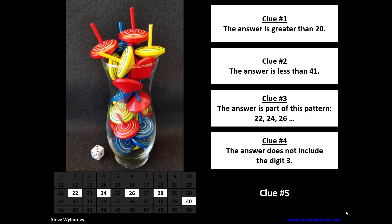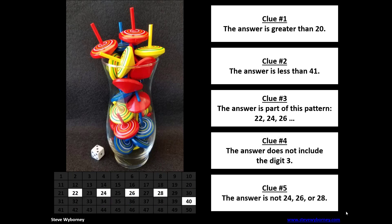Clue 5: the answer is not 24, 26, or 28, so all of those numbers will be eliminated. At this point, not only have I seen the clues, I also know that the final decision is going to come down to 22 or 40.